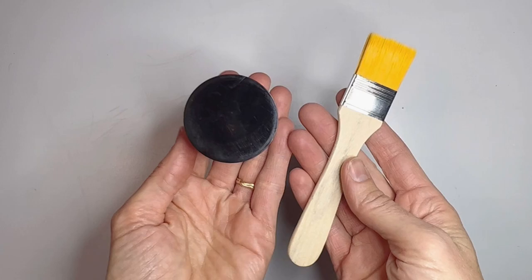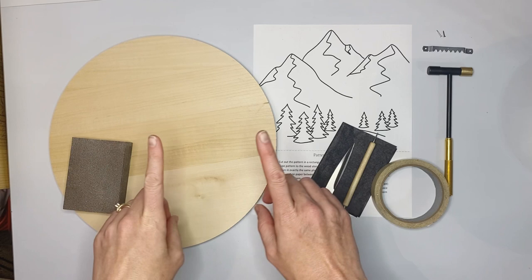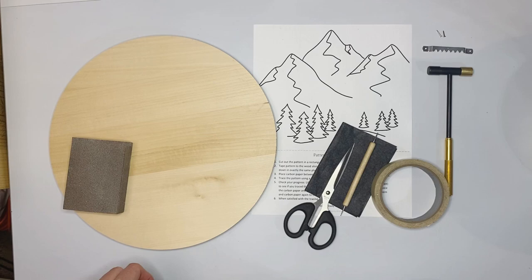You will also need polycrylic and a paintbrush. And you will also need your burner. And if you are looking to upgrade your burner I can definitely give you a recommendation. My favorite burner is in the description. There's a link to it. It's the Colwood Detailer. It's my absolute favorite machine and I do have a discount code for you. It's coupon code SAVVY.